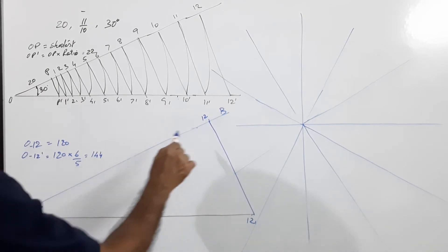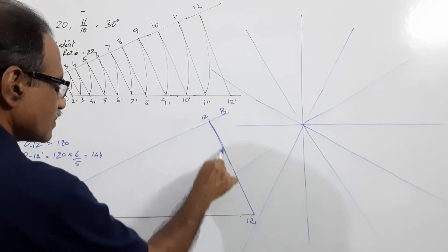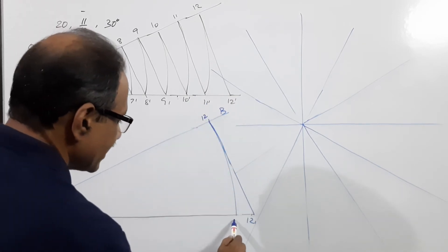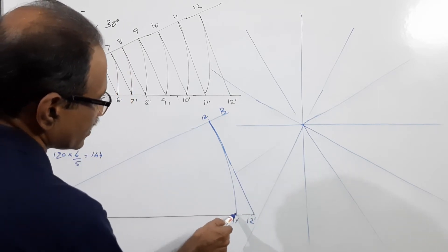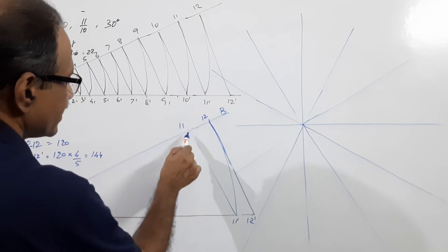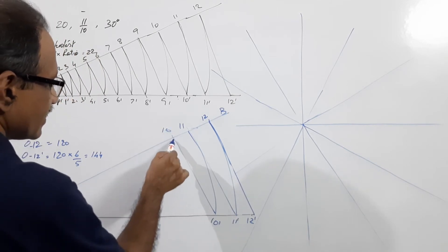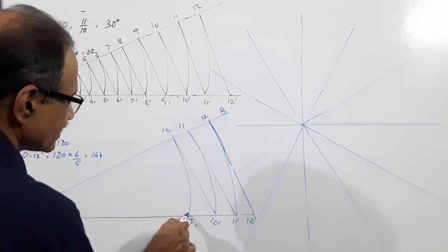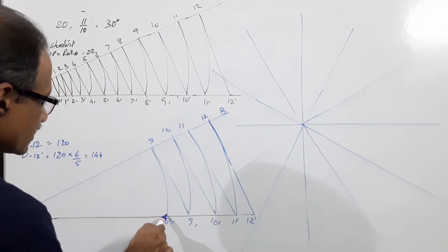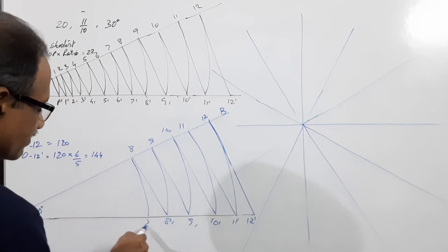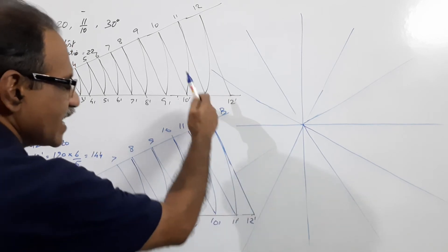Now O as center, O12 as radius, draw an arc. This is 11 dash. Through 11 dash draw a line parallel to this, what is this? This is 11. Then 10 dash, 10, 9 dash, 9, 8 dash, 8, 7 dash, 7. These lines or straight lines are drawn parallel to the line 12-12 dash.